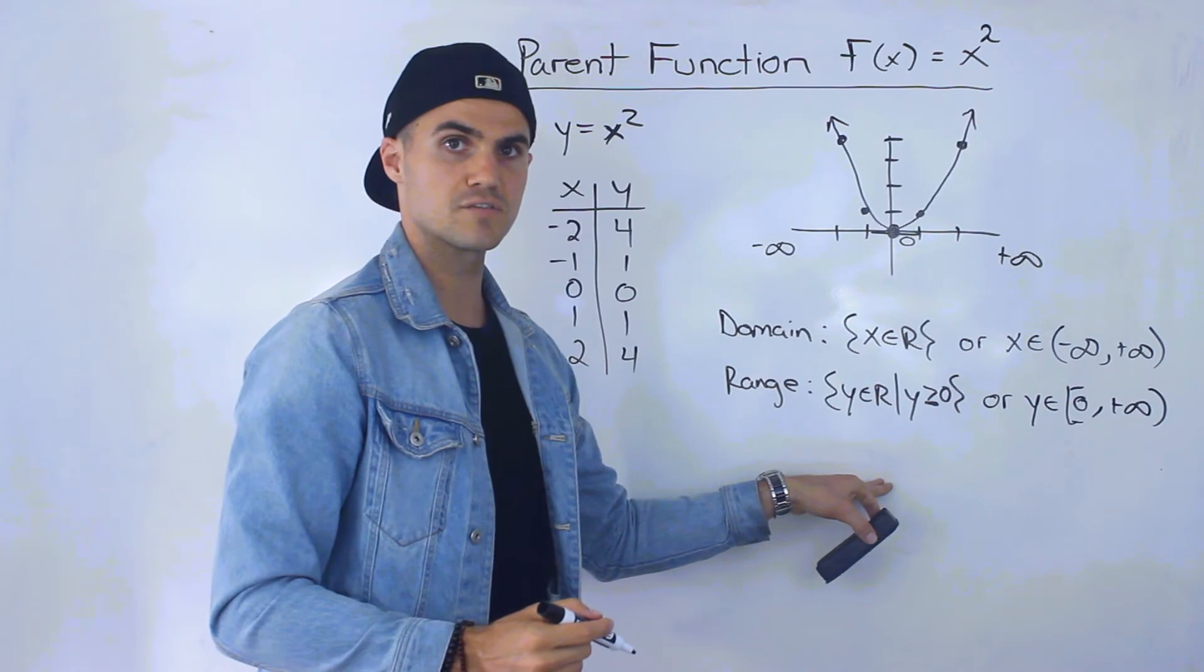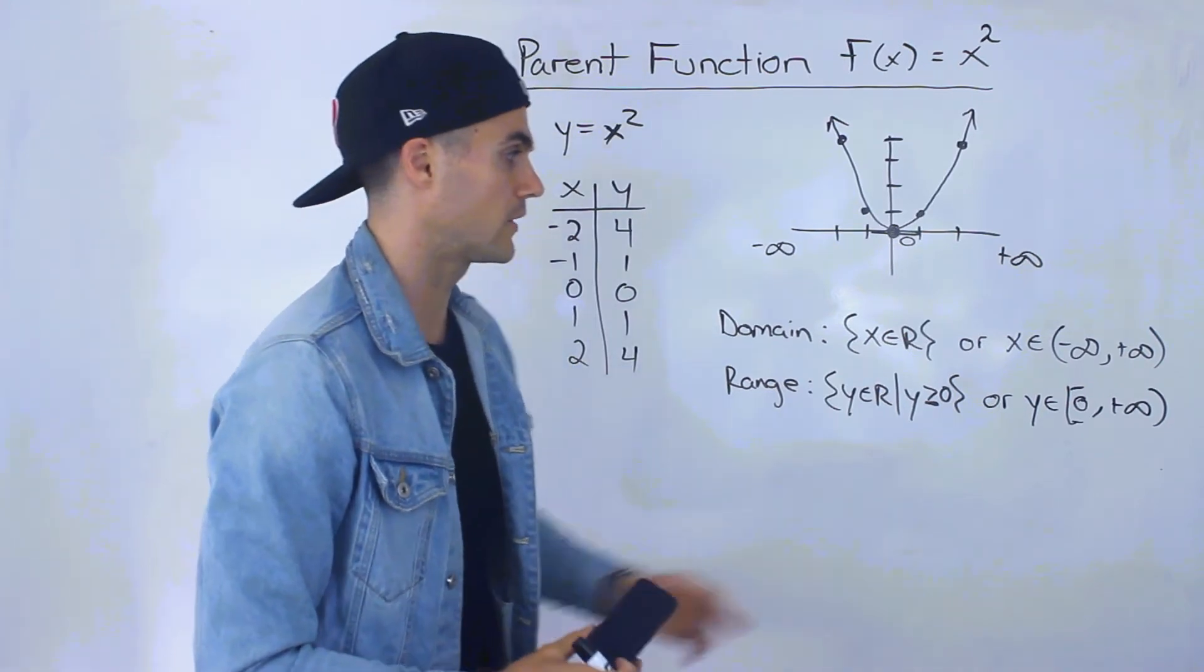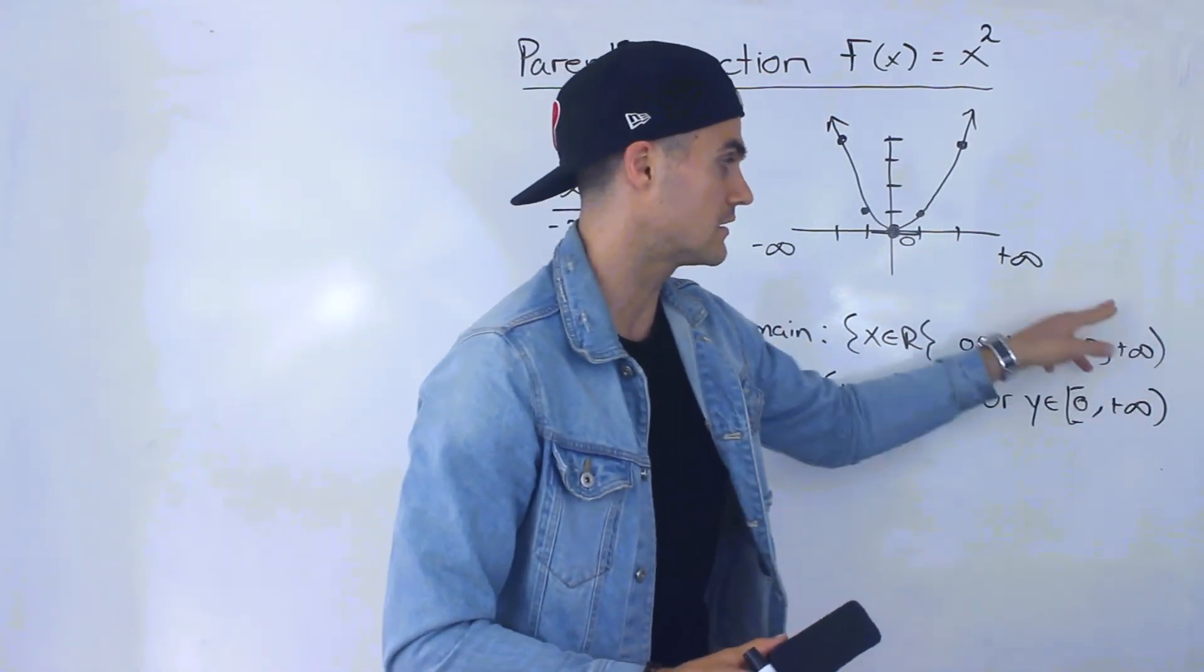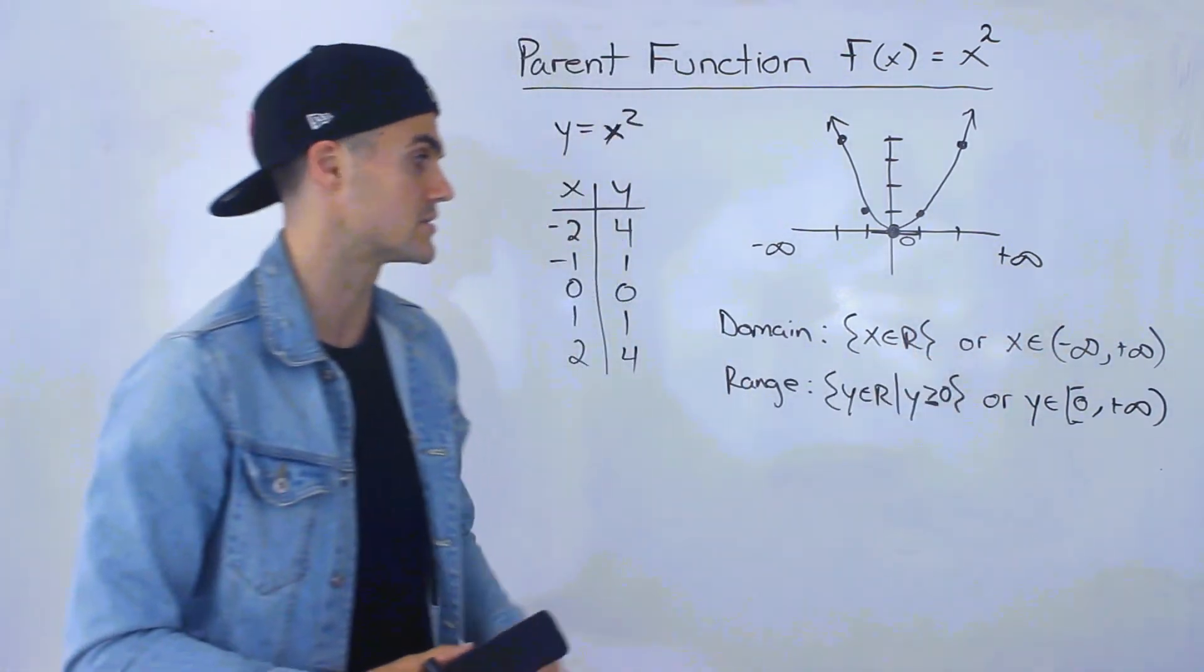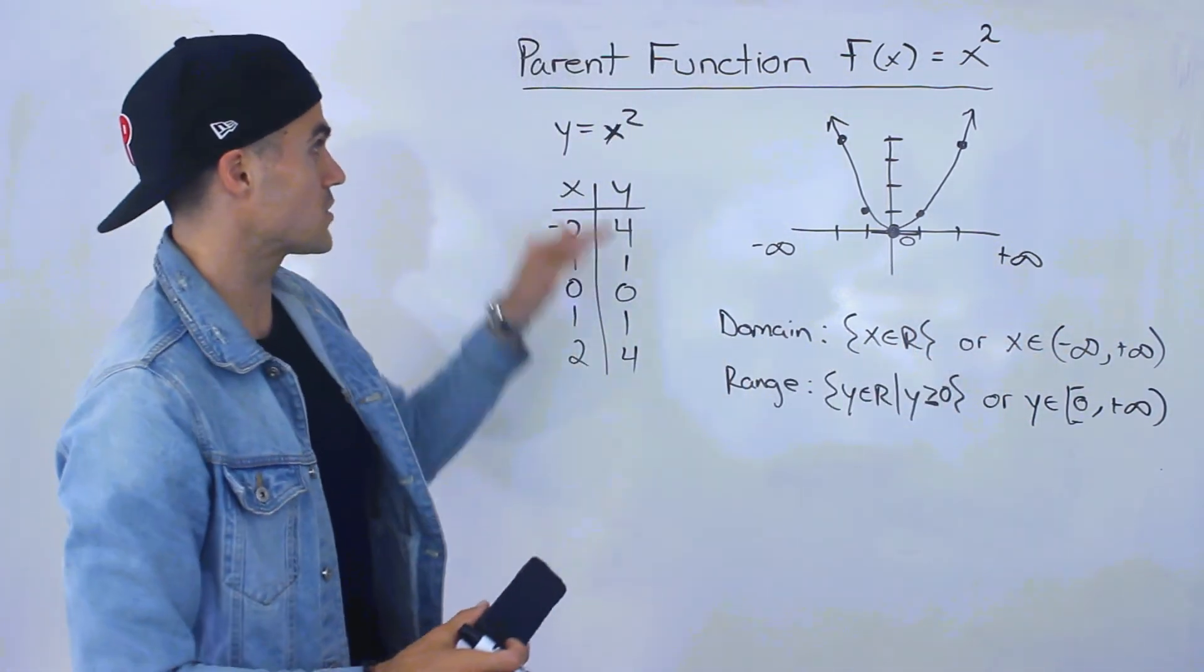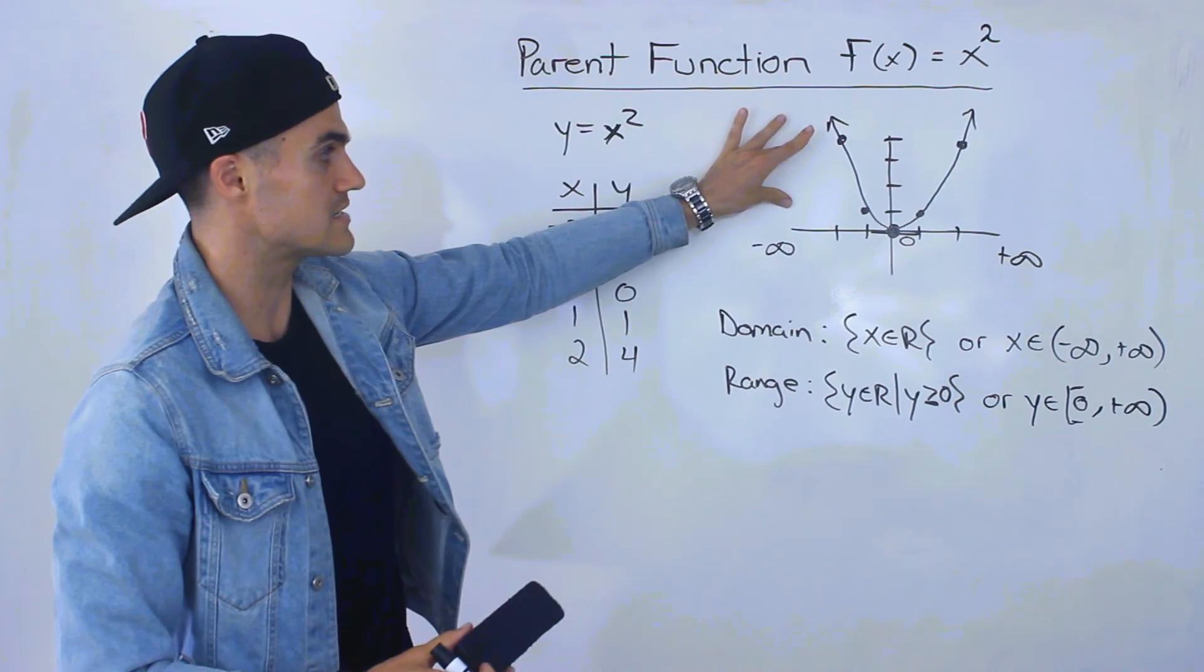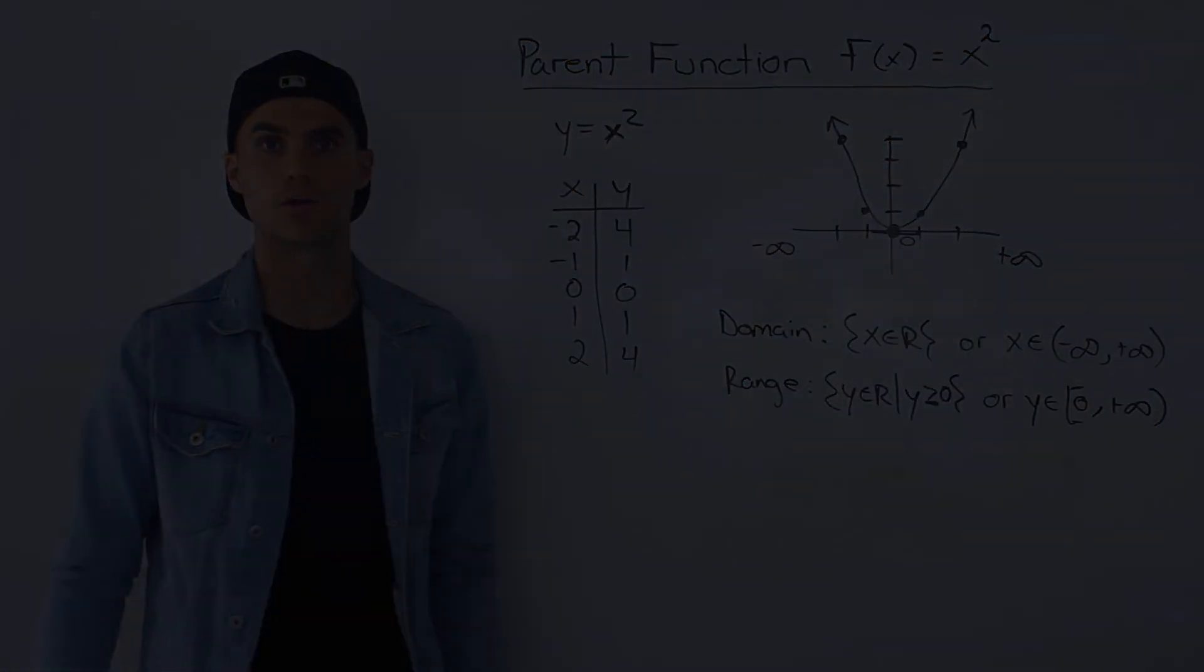Whenever it's inclusive of a number, you put a square bracket. When it's not inclusive, you put a round bracket. And whenever there's negative or positive infinity, that always has a round bracket. So y = x² is the regular parent function. That's the domain and range.